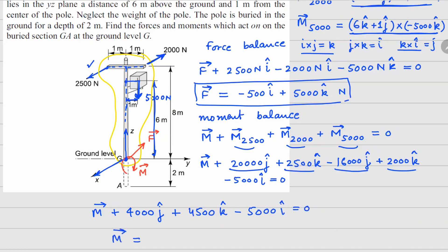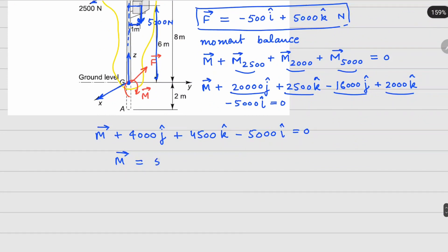So if I rearrange, move everything to the right hand side. I'm going to get 5000 i cap minus 4000 j cap minus 4500 k. And this is the moment and the unit for this is going to be Newton meter. So in terms of force, this is the force experience at G and this is the moment experience at G.